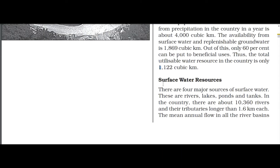There are four major sources of surface water: rivers, lakes, ponds and tanks. There are about 10,360 rivers and their tributaries longer than 1.6 kilometers each in the country. This is important information that can also come in your short questions, so keep note of it.